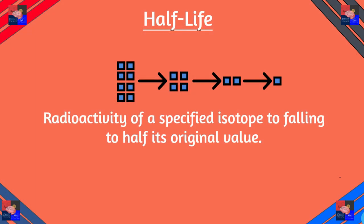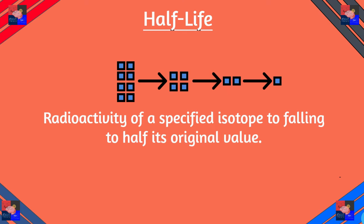Before we continue, we just talked about uranium decomposing into thorium — now how does that work? Well, let's talk about half-life. It's basically breaking something down repeatedly. So we have one of something, then it's a half, then a fourth, then an eighth, 16th, 32nd, and so on and so forth. So uranium basically broke down to thorium and released the alpha particle.